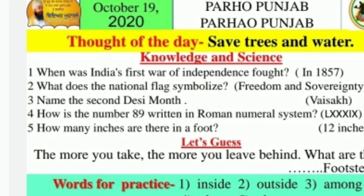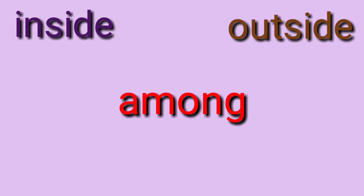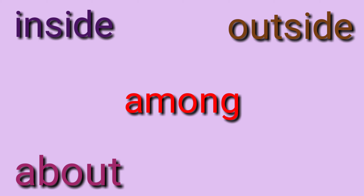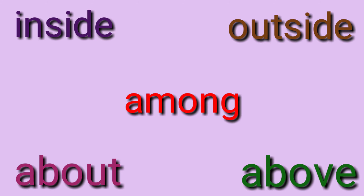Words for practice. First: I-N-S-I-D-E — inside. Second: O-U-T-S-I-D-E — outside. Third: A-M-O-N-G — among. Fourth: A-B-O-U-T — about. And last: A-B-O-V-E — above.